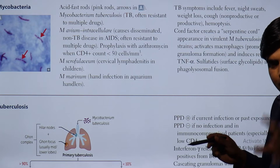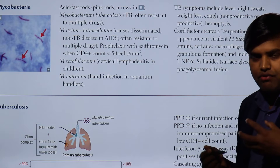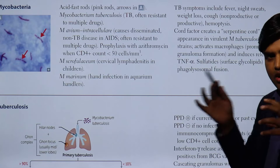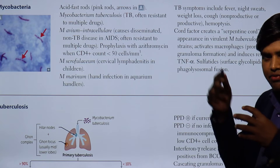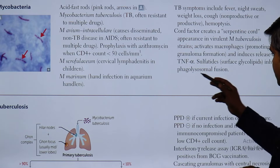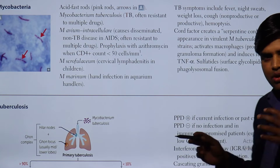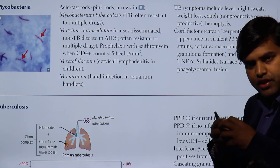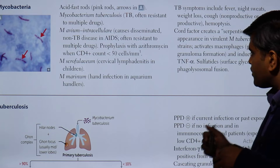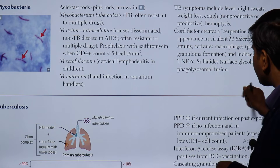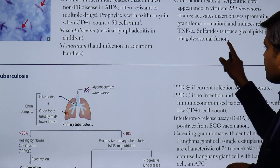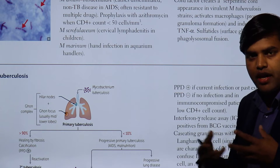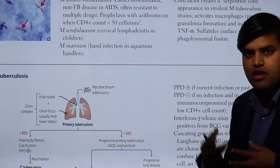Additionally, there are sulfatides — surface glycolipids that inhibit phagolysosome fusion. Normally, when a bacterium is engulfed by a macrophage, it goes into the phagosome; if it cannot be killed there, the lysosome fuses with the phagosome to form the phagolysosome, where the bacteria are killed. Sulfatides inhibit this phagolysosome fusion, so the organism easily survives and the pathogenesis progresses.